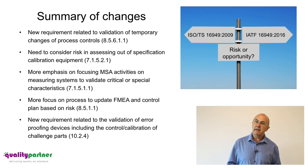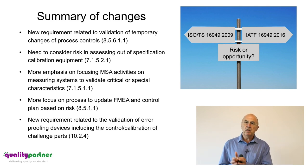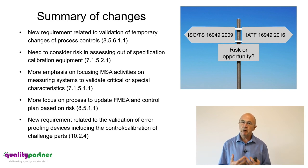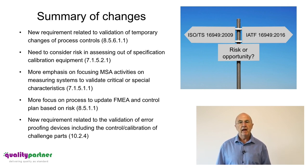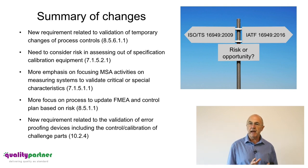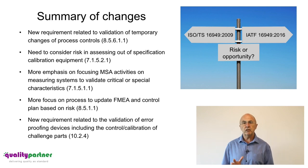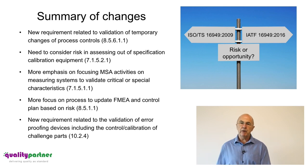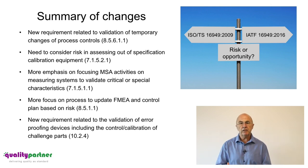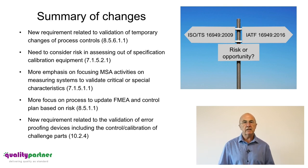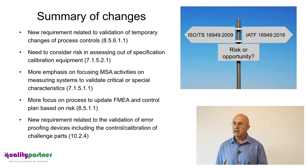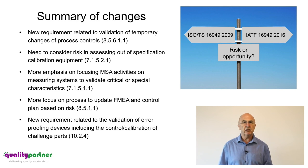There is more focus on updating the FMEA and control plan — they should drive what monitoring and measuring we do, but things will change: performance will change, customer satisfaction will change. So we periodically need to go back and review FMEAs and control plans, and that frequency needs to be dependent upon risk. Finally, there are new requirements related to validation of error proofing devices, including the control and calibration of challenge parts. It's great to build error proofing into a process, but we need to make sure those devices are working — building that into instructions, control, and calibration. In conclusion, monitoring and measuring will play a key role in making a successful transition to ISO 9001:2015 and IATF 16949:2016.